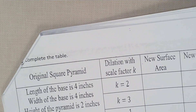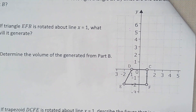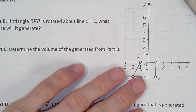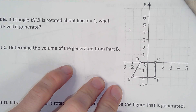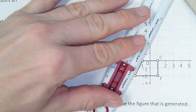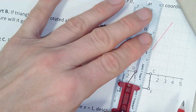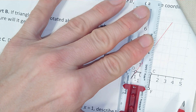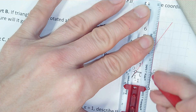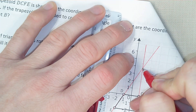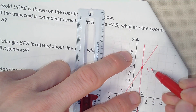Number 39: we have a trapezoid that is extended to create a right triangle. We need to extend these lines to create a right triangle, and find where that coordinate ends up. It looks like it's about point (1, 4).